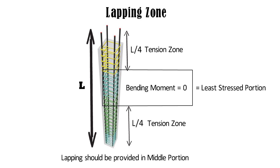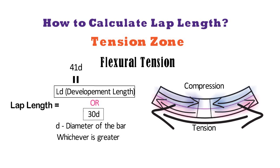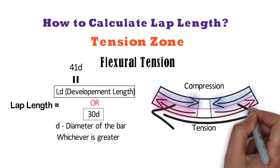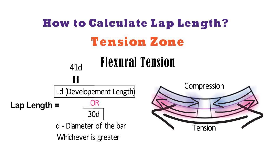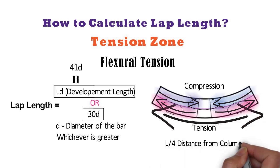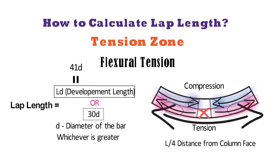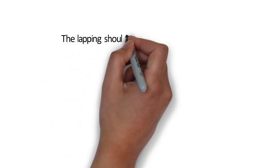In case of a beam, the top portion experiences compression and the bottom portion experiences tension. So the top reinforcement in a beam is lapped at mid span, as the beam does not experience any negative moment at mid span. In case of bottom reinforcement, the lapping is provided near the ends of the beam or at L/4 distance from the column face, but should not be at the mid span of the beam. And one last point — lapping should not be provided at joints.